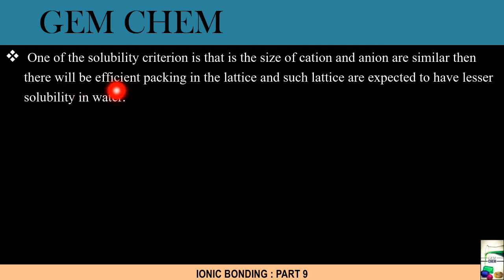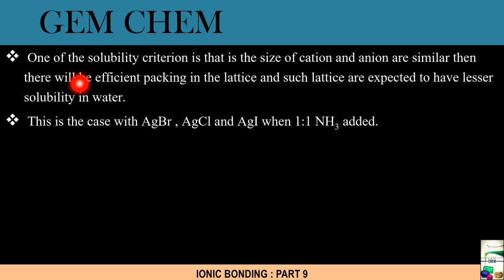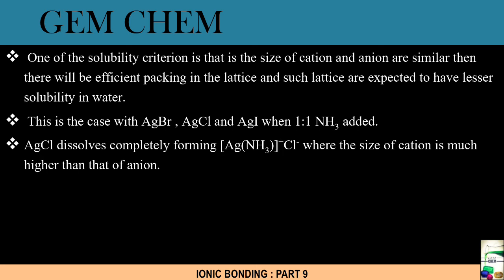So one of the solubility criteria is that the size of the cations and anions in a solution must be similar. Then there will be efficient packing in the lattice and such lattices are expected to have lesser solubility in water if they are similar in size. This example for this fact is that AgBr, AgCl and AgI when added with 1:1 ammonia - we are taking one amount of AgBr and same amount of ammonia solution. So what happens is that AgCl dissolves completely forming this kind of cation [Ag(NH3)2]⁺ Cl⁻ where the size of cation is much higher than that of anions, so it gets completely soluble.